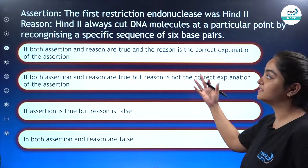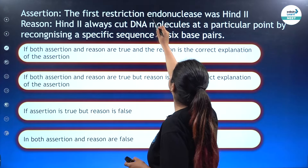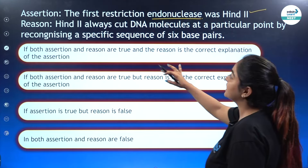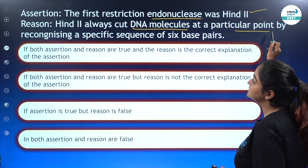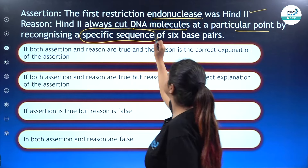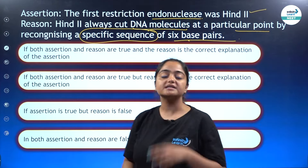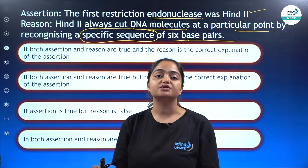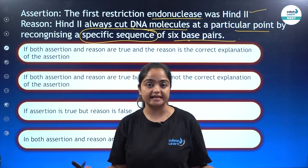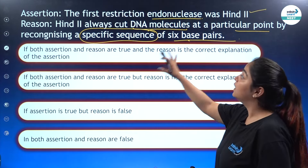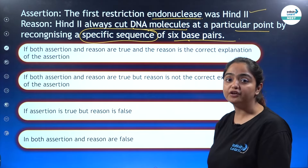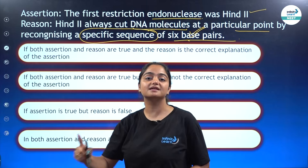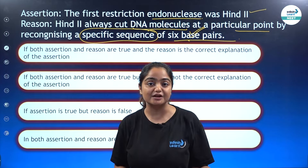Now the second question of the same pattern. The assertion says the first restriction endonuclease was HindII — this is absolutely correct. The reason is HindII always cuts DNA molecules at a particular point by recognizing a specific sequence of six base pairs. This is also absolutely true because HindII is the first restriction enzyme, and every restriction enzyme needs a specific sequence when it cuts DNA. HindII cuts at a particular point after recognizing the specific sequence of six base pairs. Both assertion and reason are correct, but the reason is not the correct explanation of the assertion.